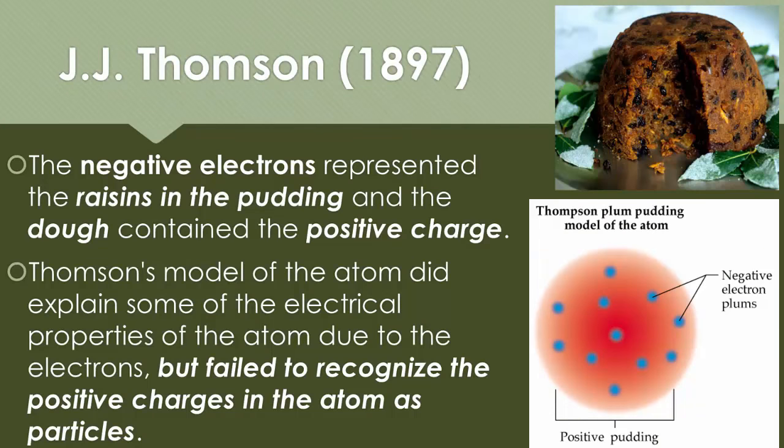The negative electrons represented the raisins in his plum pudding model, and it contained a positive charge, the dough of it. Thompson's model of the atom did explain some of the electrical properties of the atoms due to the electrons, but failed to recognize the positive charges in the atoms as particles. Just that doughy area ends up being that positive section, and then we have these electrons that are just kind of stuck everywhere within it. The word atom represents something that is neutral, and so now that we have charges, this is still considered neutral because the positive and the negative will balance each other out.